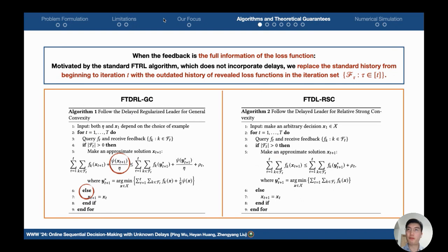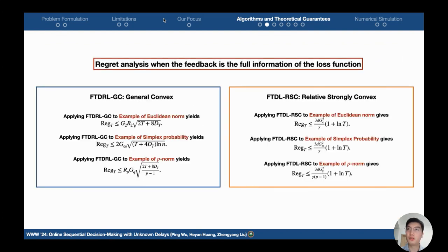When the feedback is the full information of the loss functions, motivated by the standard follow-the-leader algorithm, we replace the standard history with the outdated history of the received loss functions. The results show that our full delayed leader can achieve the sublinear regret.